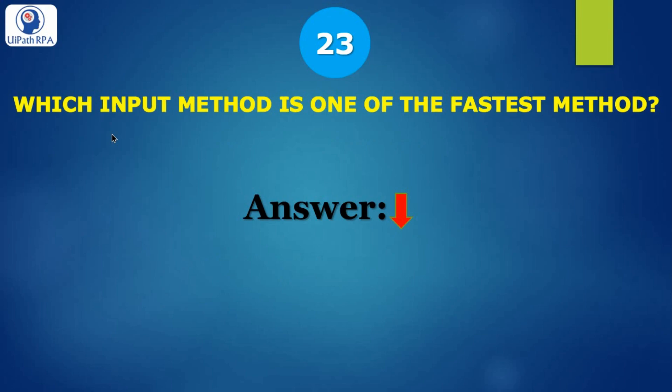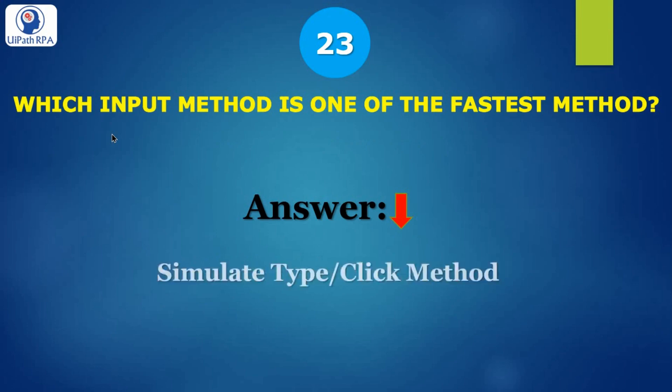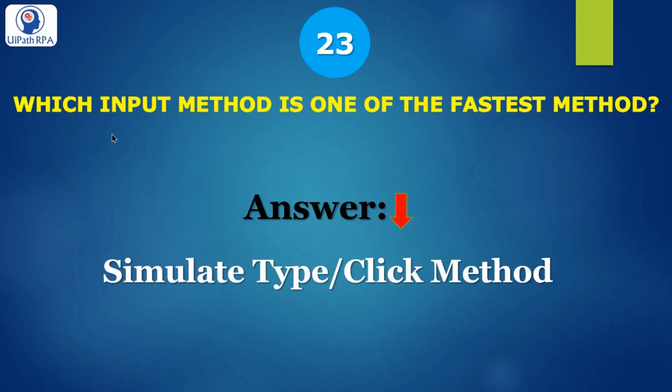Question 23: which input method is one of the fastest methods? We have Simulate Type/Click method. If you are using Type Into activity, the name will be Simulate Type method. If you are using Click activity, the method will be Simulate Click method. That's why the name is Simulate Type/Click.